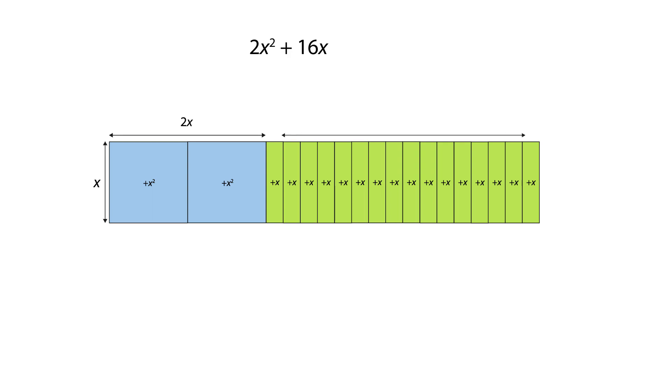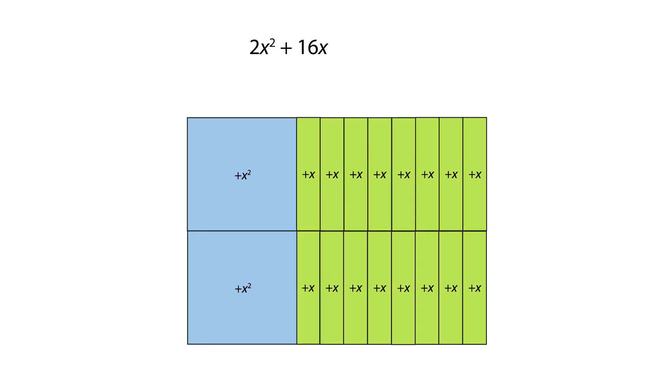There is another way to arrange the tiles as a rectangle, this time with dimensions 2x and x plus 8. We can see that the full factorization of 2x squared plus 16x is the product 2x multiplied by x plus 8.